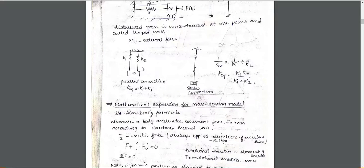P(t) is the external force. The equation involves stiffness k. In a parallel connection, k-equivalent is equal to k1 plus k2. In a series connection, 1/k-equivalent equals 1/k1 plus 1/k2, so k-equivalent equals k1·k2 divided by (k1 + k2).